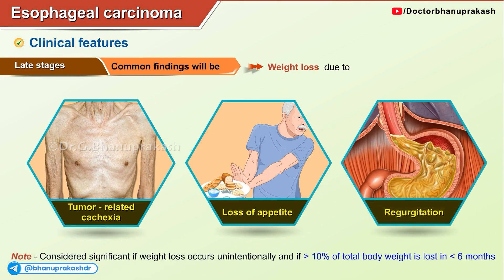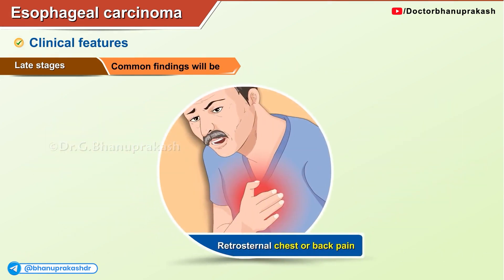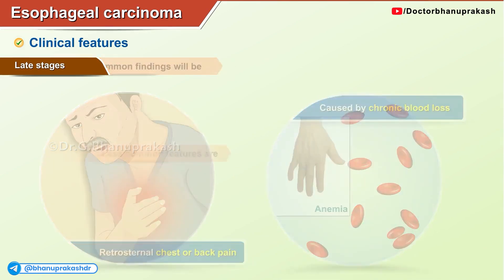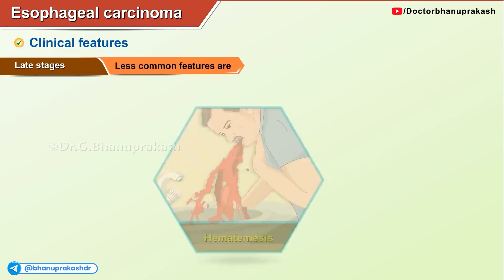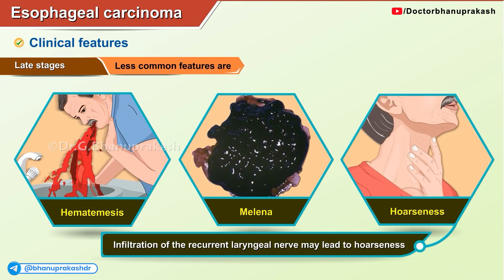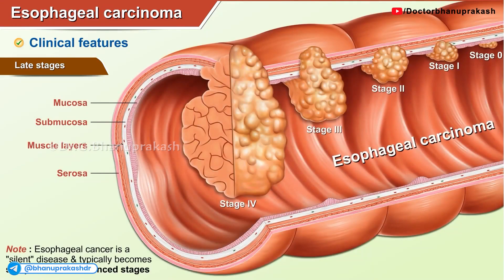Weight loss is considered significant if it occurs unintentionally and more than 10% of total body weight is lost in less than 6 months. Other late features include retrosternal chest or back pain, anemia caused by chronic blood loss, and less common features such as hematemesis or melena. Hoarseness may occur due to infiltration of the recurrent laryngeal nerve. Note that esophageal cancer is a silent disease and typically becomes symptomatic at advanced stages.